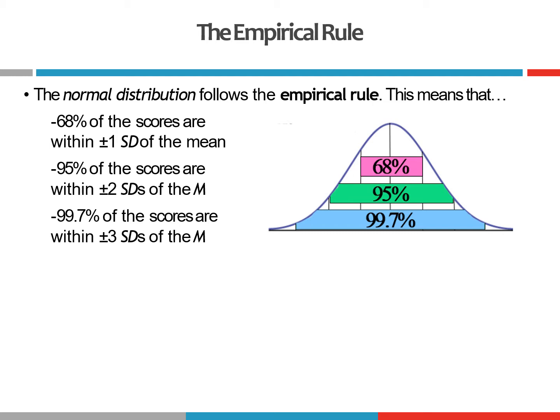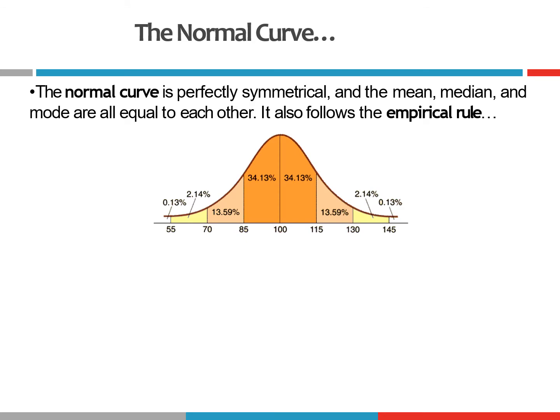So why does this matter? Normally distributed data, or data that approximates a normal curve, when we create a frequency graph like a histogram and trace a line over the frequency bars, if what we get is a normal curve, it's going to be perfectly symmetrical. The mean, median, and mode are all going to be equal to each other. And because we have the empirical rule, we can start to estimate certain probabilities.